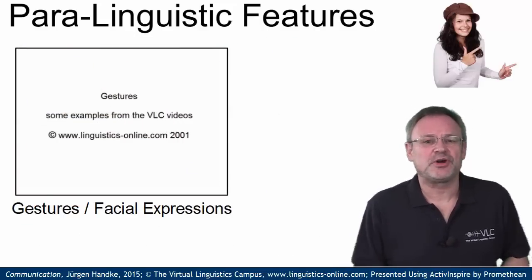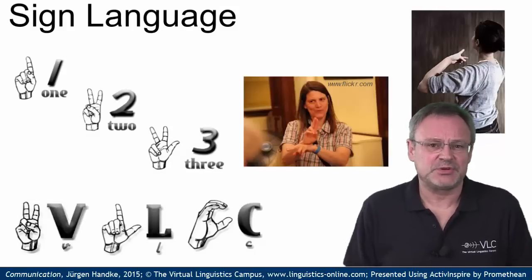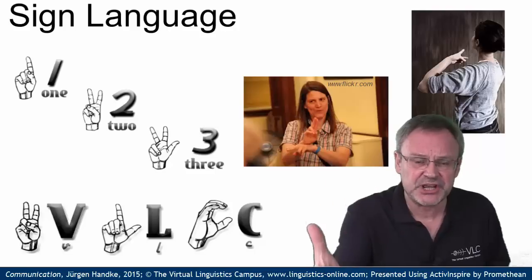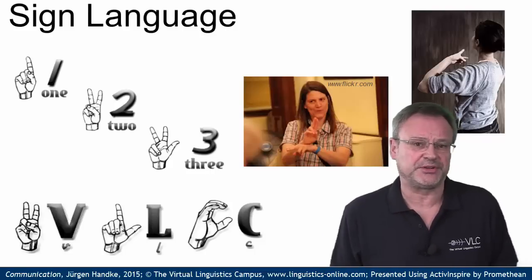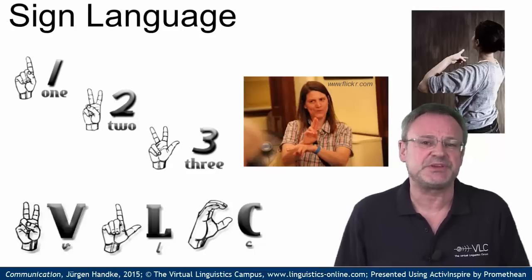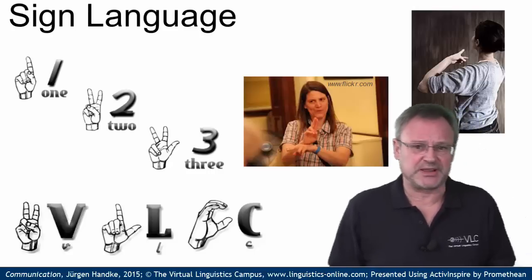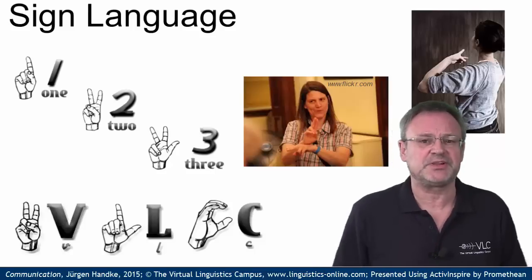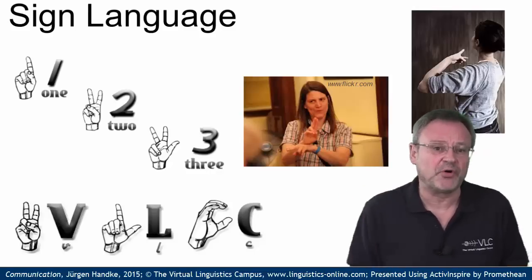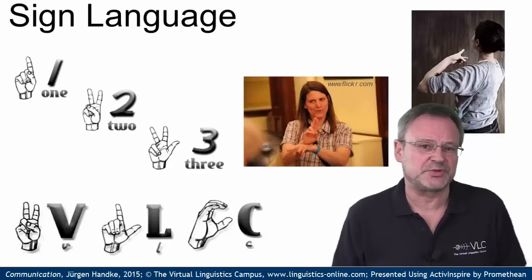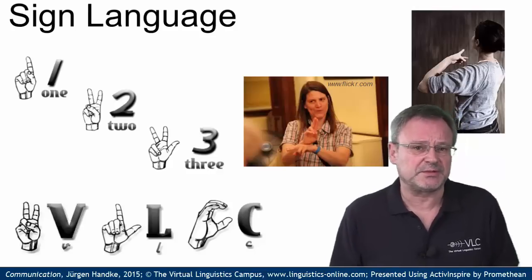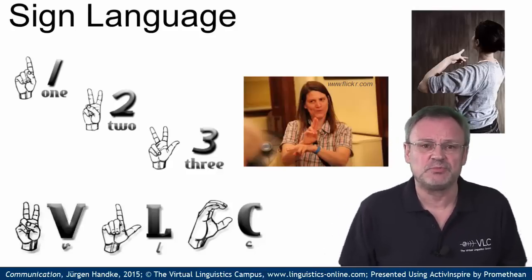Finally, let's briefly talk about sign language. A sign language uses manual communication and body language to convey meaning. This can involve simultaneously combining hand shapes, orientation, location and movement of the hands, arms or body. Furthermore, non-manual expressions — that is, facial expressions — are added to fluidly express a speaker's thoughts. Sign languages share many similarities with spoken languages, which is why linguists consider both to be natural languages. However, sign languages are independent from spoken languages even though sometimes spoken language elements are borrowed. The grammatical structures at the core of both forms differ greatly, and simultaneous expressions — impossible in spoken languages — occur frequently in signed ones.